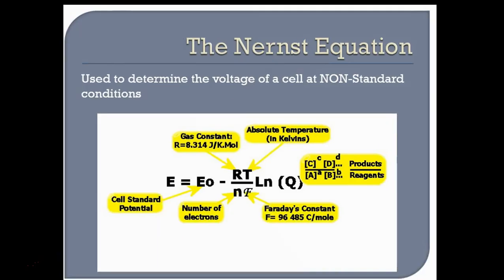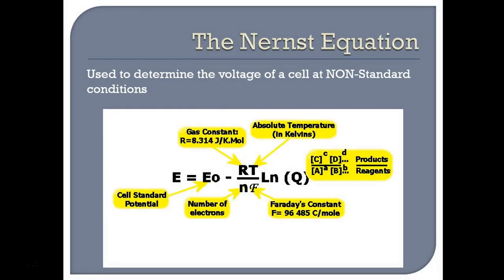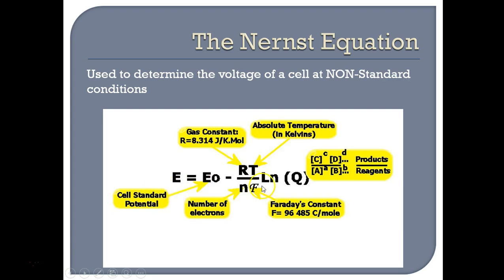Next we have the Nernst equation, which is used to determine the voltage of a cell at nonstandard conditions. When we calculated E° back in Unit 9, that was the voltage at standard conditions: 298 K, one atmosphere, one molar solutions. In this equation: E is the nonstandard voltage, E° is the standard cell potential, n is the number of electrons, F is Faraday's constant (96,500 C/mol), T is the Kelvin temperature, and we multiply by the natural log of Q — the reaction quotient. This is in the data booklet, so you just need to know what each factor means.